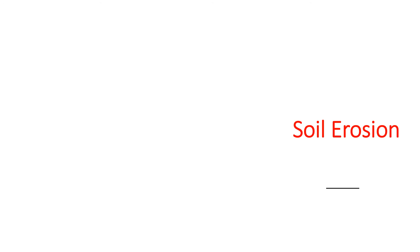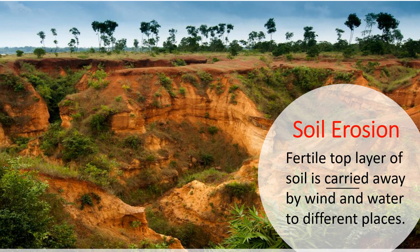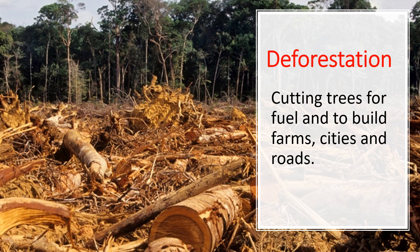Now we know the importance of soil. But how is soil getting eroded, and what are the causes of soil erosion? Sometimes the fertile top layer of the soil is carried away by wind and water to a different place — this is called soil erosion. It makes the land infertile. The increase of soil erosion is because of deforestation. We cut trees for fuel and to build farms, cities and roads — this is called deforestation, and it causes an increase in soil erosion.